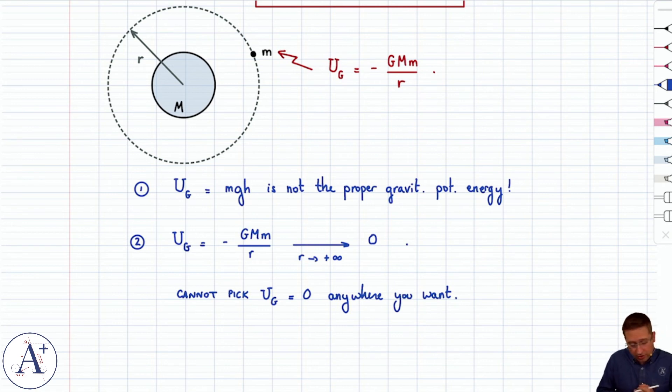But the point is, and it's really important, that you cannot go picking any reference for your gravitational potential energy and you cannot use MGH. It doesn't work that way for these types of problems.